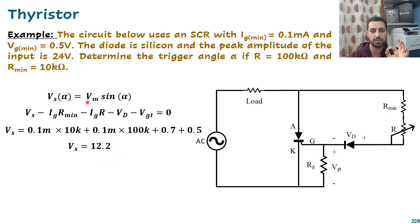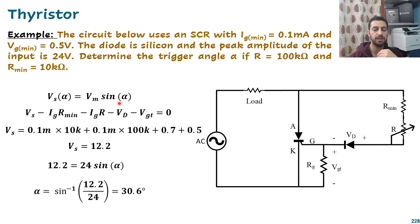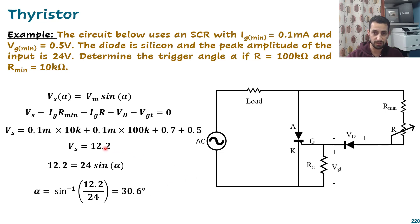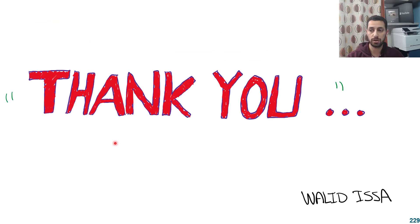Going back to the equation V_s = V_max × sin(α), we know V_s = 12.2 V and V_max = 24 V. We can compute α: sin(α) = 12.2/24, giving α ≈ 30.6°. This approach can also be used with a microcontroller — feed these equations to a microcontroller, which triggers the thyristor once it computes the voltage you want to apply. After covering these two examples, I'm confident to end the talk about thyristors and triacs. Thank you very much, and see you in the next video.